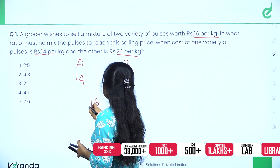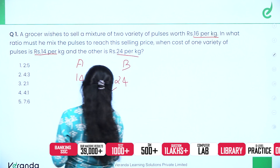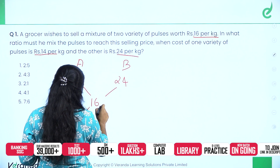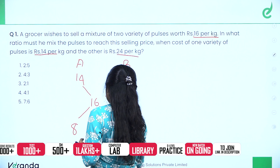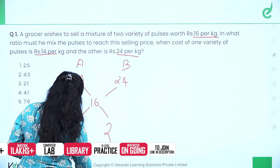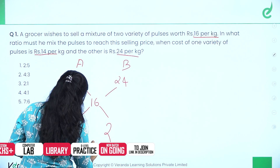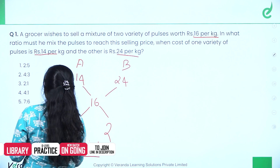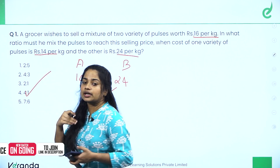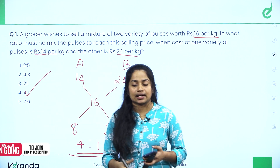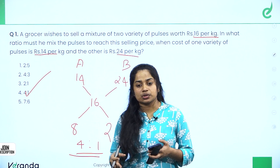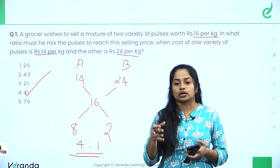We have to find the ratio of the number of pulses. Using alligation: 16 minus 14 equals 2, and 24 minus 16 equals 8. Cancel to get 4 is to 1. So we have to mix them in a 4 to 1 ratio — the answer is to mix 14 and 24 in a 4:1 ratio.